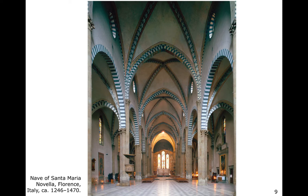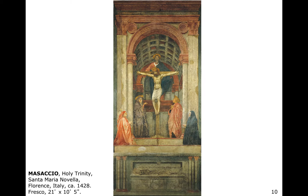This is a piece that was commissioned by the donors shown in the front — the first two figures here in the foreground. Instead of paying to build a whole chapel, they created a painting, a much cheaper option. Masaccio really understands one-point perspective and he utilizes it, applying Brunelleschi's idea of perspective.